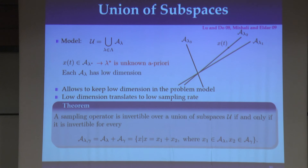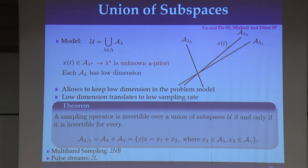The reason this model is so powerful is because it paves the way to the following theorem, which is really the key to sub-Nyquist sampling. What this theorem says is that if your signal lies in a union of subspaces — and it doesn't matter how many elements are in this union — the sampling rate you need is just the rate associated with a sum of two subspaces. So you might have a million options, and the sampling rate you need corresponds to the rate when you sum only two of those options, not all of them. What that means in practice, for example, is that in the multiband model if we have N bands of width B, the minimal rate will be 2NB; in the pulse model if we have L pulses, the minimal rate will be 2L. These rates have absolutely nothing to do with the Nyquist rate.